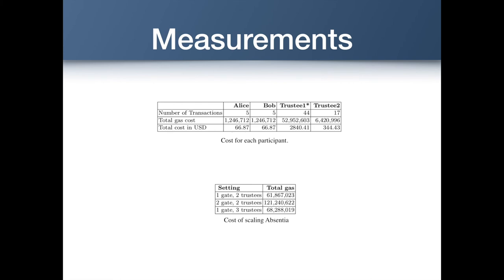The first table shows the cost per participant — the total number of transactions and total cost for Trustee1 is the highest. The second table shows how Absentia scales in different settings. If we want to evaluate another gate, Alice and Bob still perform the same number of transactions, but nearly all of the remaining functions are run twice as many times. When we go back to the single gate setting, introducing another trustee is not as expensive — each additional trustee has a marginal cost equal to Trustee2's cost in the first table.